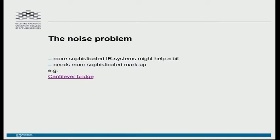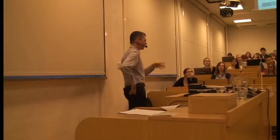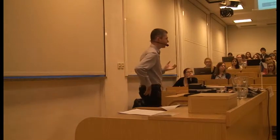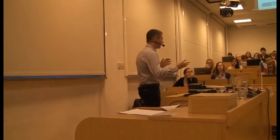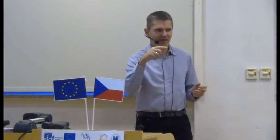The noise problem can perhaps be solved if we get more sophisticated information retrieval systems that make use of more sophisticated markup. Rather than having Google exploit HTML markup for retrieving documents, we would need some kind of XML language for use as markup, and then have systems able to interpret those XML languages and collect exact data from such sources and combine them.